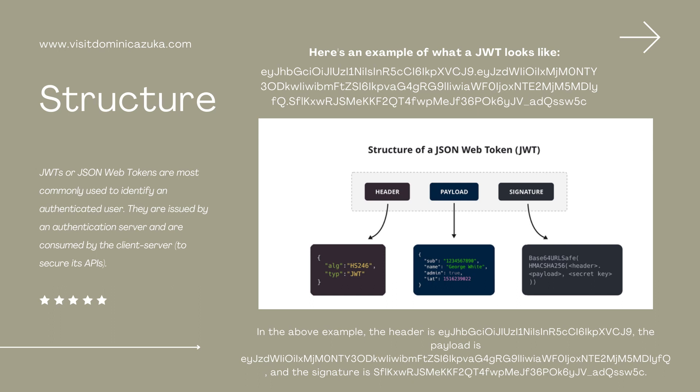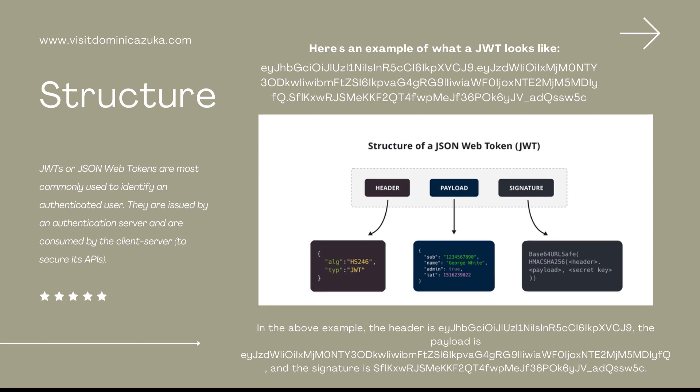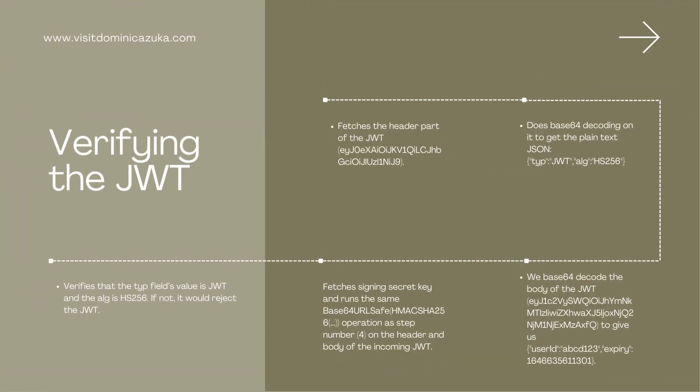The payload contains the data that has been sent either from the client or the server side, while the third part of the JWT is the signature.